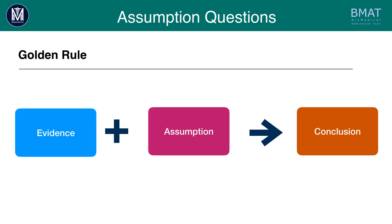The golden rule to remember is that evidence plus assumption will give you a conclusion. Evidence plus assumption equals conclusion. Whatever you take away from this tutorial, this is the most important thing that you have to remember.